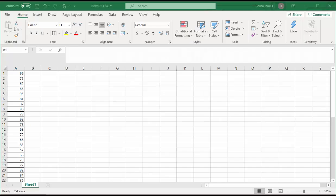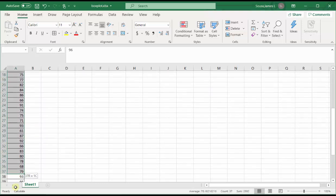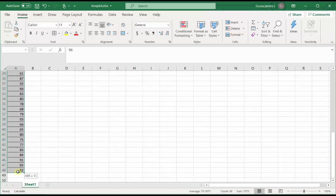I already have the data in Excel. I'm going to highlight the data, copy by pressing Control-C, and go back to Desmos.